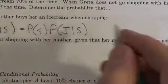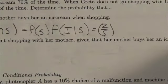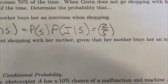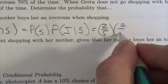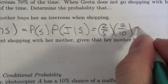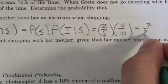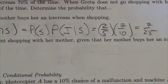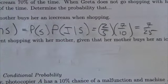The probability that she goes shopping is two-fifths. The probability that she gets an ice cream given that she's out shopping is going to be seven-tenths. So now we can simplify this a little bit and we're going to get seven-twenty-fifths as the probability that she's going to get an ice cream when she's out shopping with her mother. So we have to consider the probability of shopping and the probability that she gets ice cream given that she's out shopping.